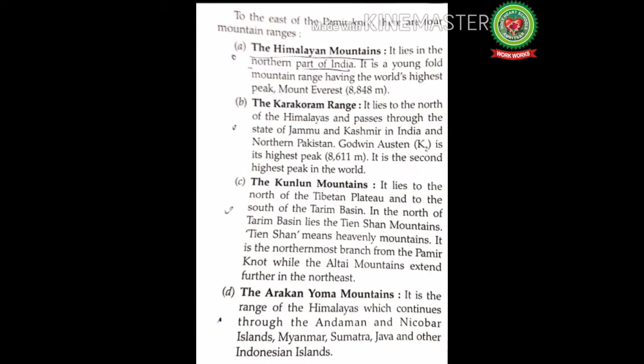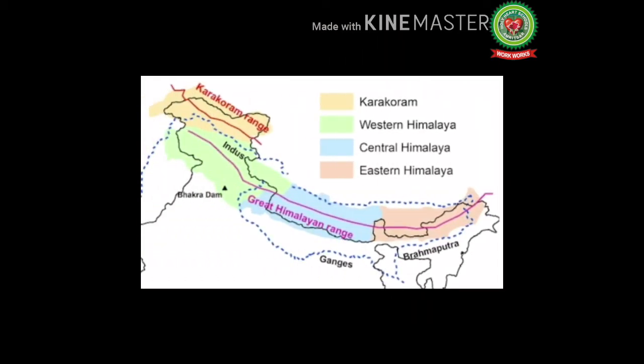To the east of the Pamir Knot there are four mountain ranges. The Himalayan mountains lie in the northern part of India. It is a young fold mountain range having the world's highest peak, Mount Everest, with a height of 8,848 meters. The Himalayas are a mountain range in South Asia — the word 'Himalaya' means 'house of snow' in Sanskrit.